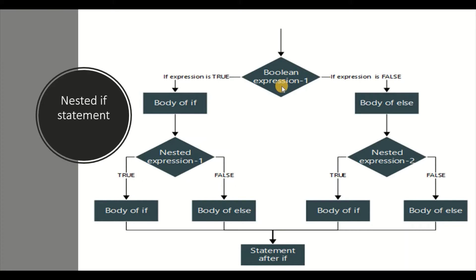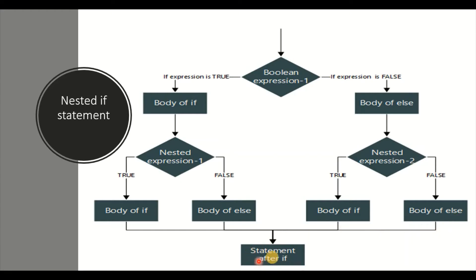Now let us see the flowchart. A boolean expression is nothing but a condition. If condition 1 is true, we go to the body of the if statement, which again consists of nested if statements. If that inner condition is true, the statement executes and comes out. If that inner condition fails, it executes the false part. If condition 1 fails, it enters the else body, which has another if condition — if true, that body executes; if false, the else part executes.